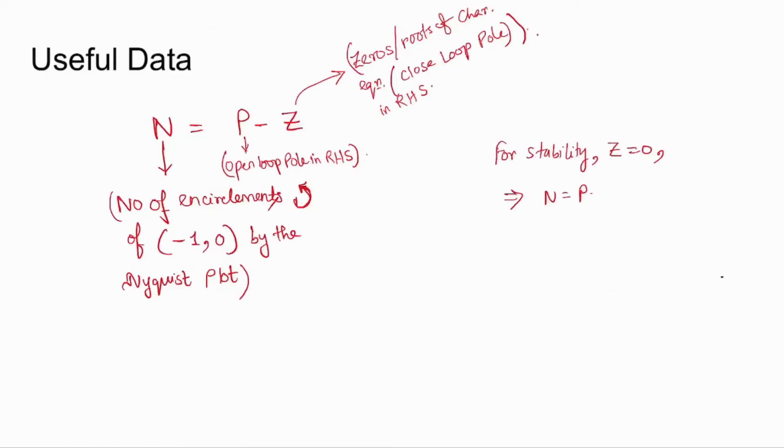Coming to the useful data: N equal to P minus Z, where N is the number of encirclements of the critical point minus 1 plus j0 by the Nyquist plot.